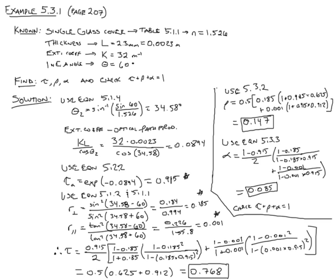We're going to check that tau plus rho plus alpha equals 1. If you punch those numbers in your calculator, 0.768 plus 0.147 plus 0.085, you end up, indeed, that they do equal 1. Check. So we've accounted for all the photons, essentially.